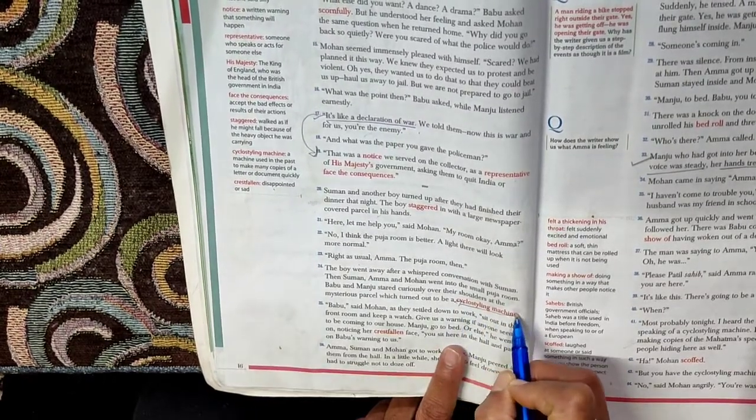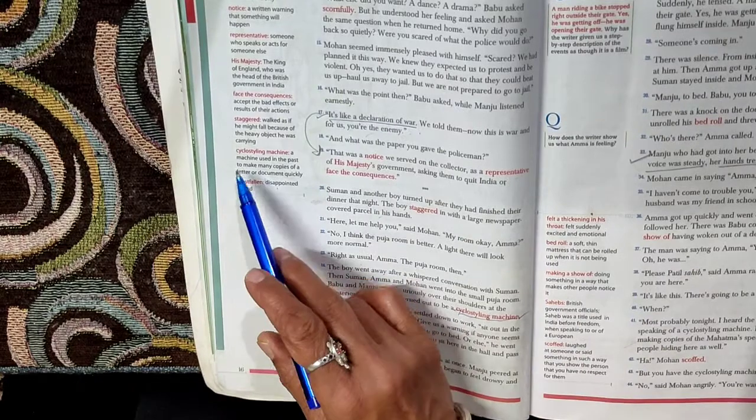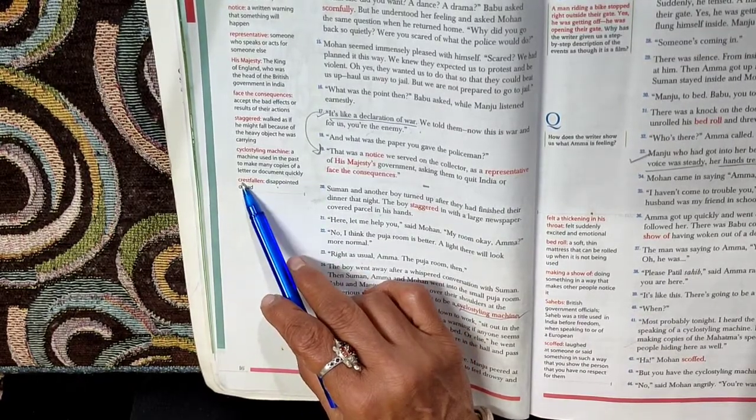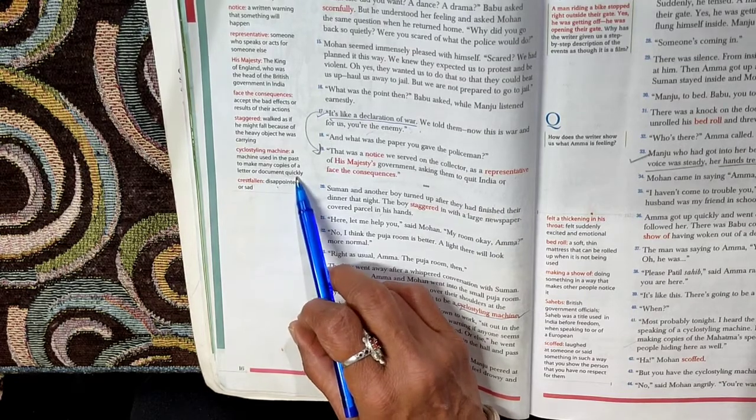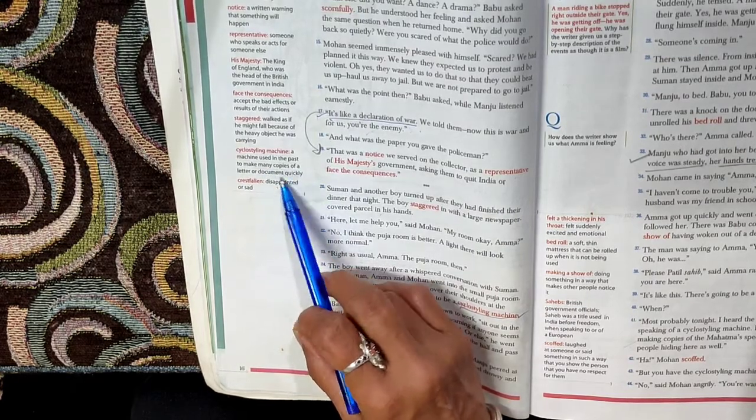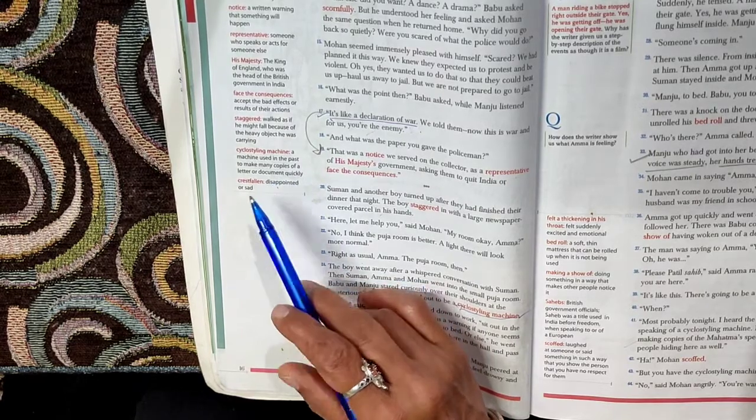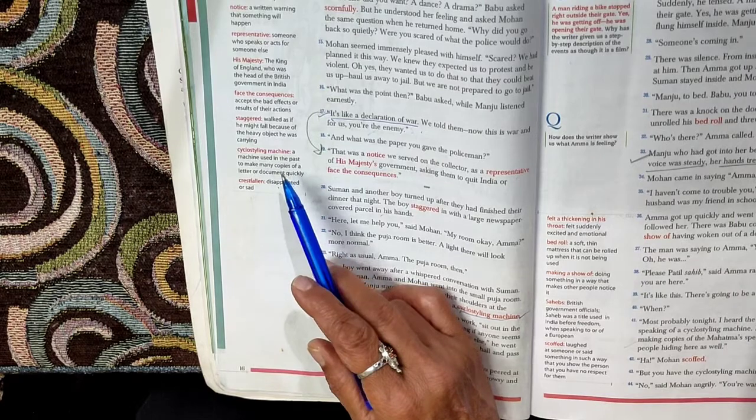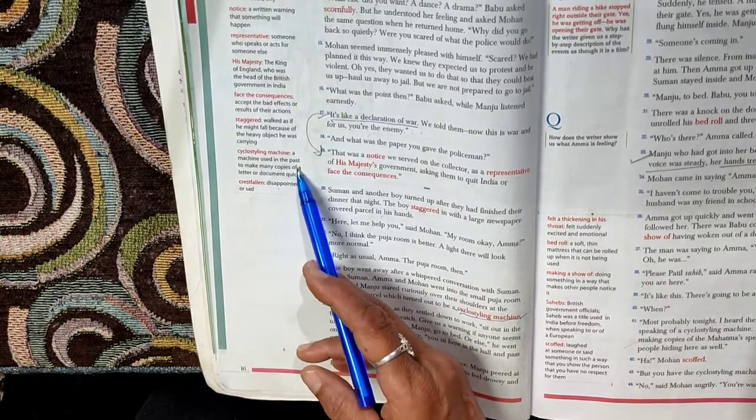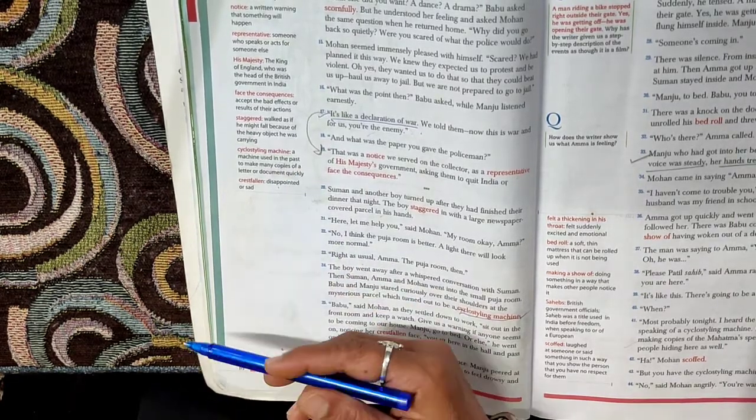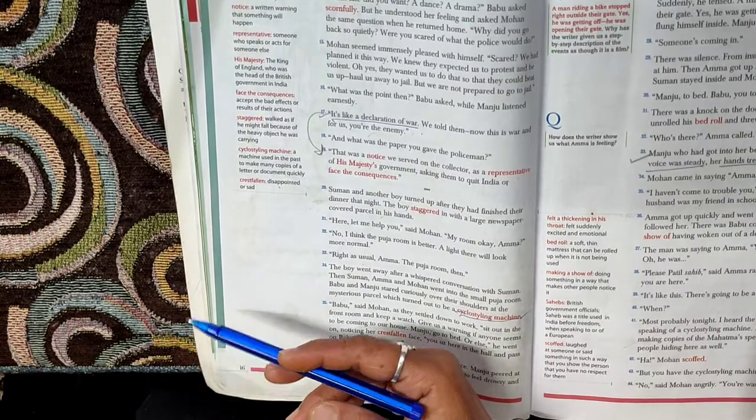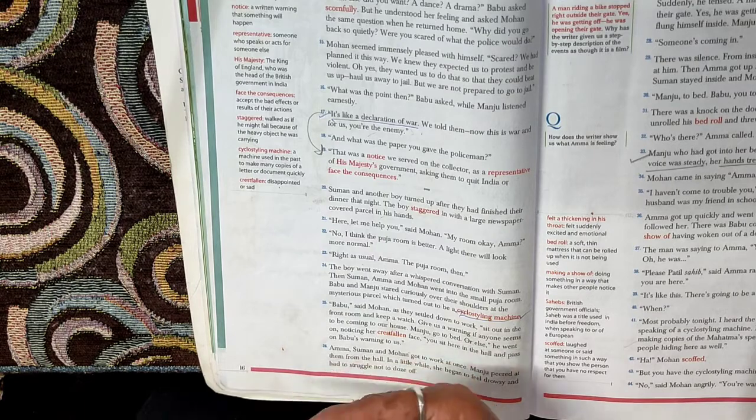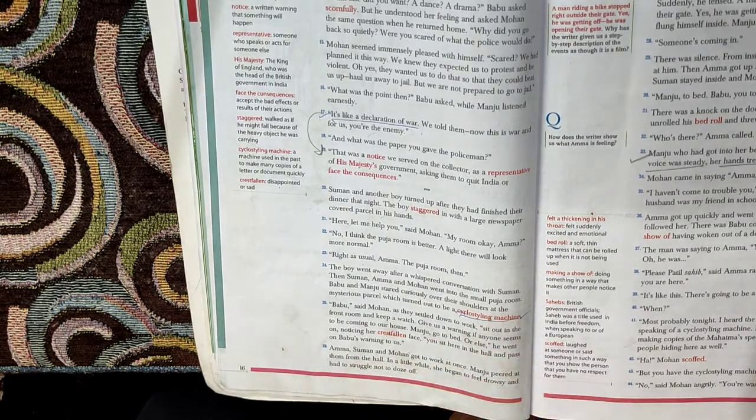Now what is a cyclostyling machine? A cyclostyling machine used in the past to make many copies of a letter or a document quickly. It's a copier, it's a photocopier or a photostat machine. In the olden days it was called a cyclostyling machine. So here it is used probably to make copies of patriotic speeches in that point in time because the people were still struggling for independence from the British rule.